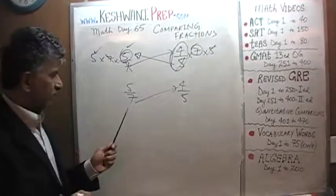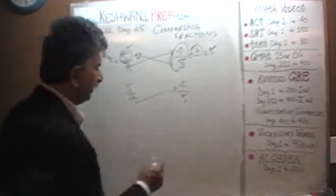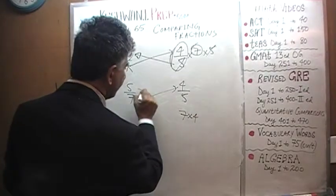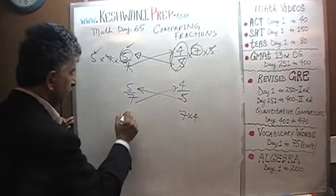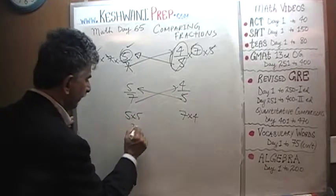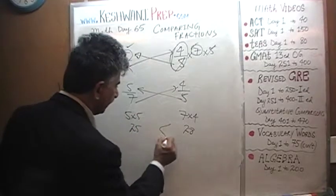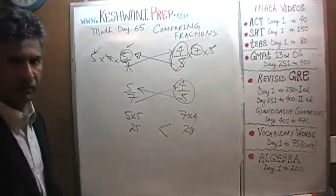Simply cross multiply here, take the 7 from the bottom, multiply it by the 4, you end up with 7 times 4 here. Take the 5 from the bottom and take it to the other side here. We end up with 5 times 5. 25 versus 28. 28 is bigger which means 4 fifths is bigger.